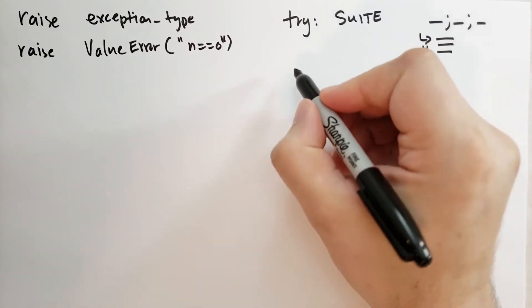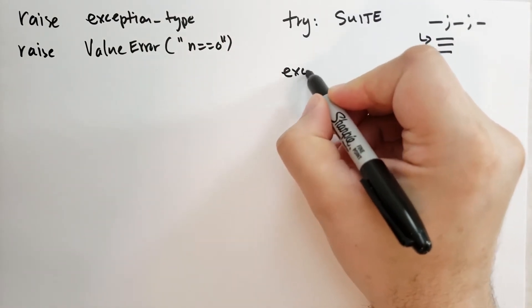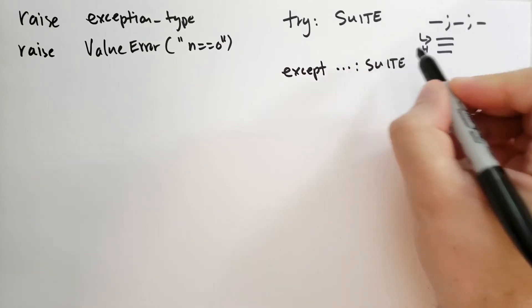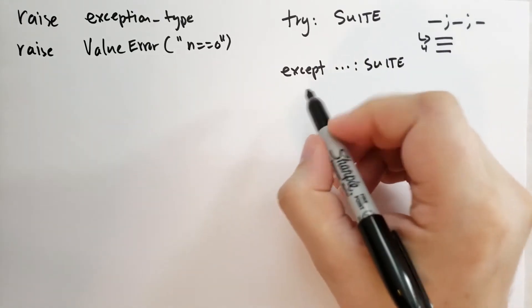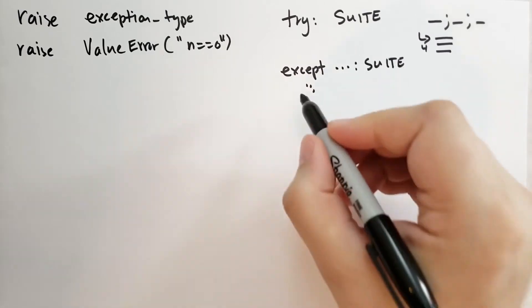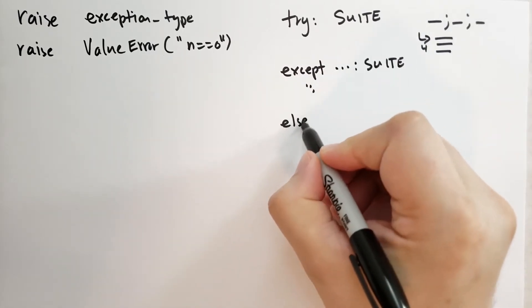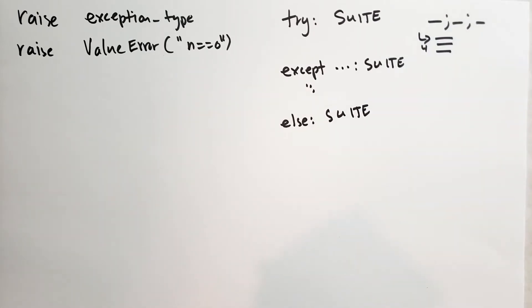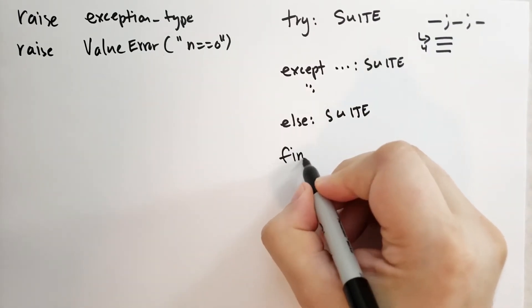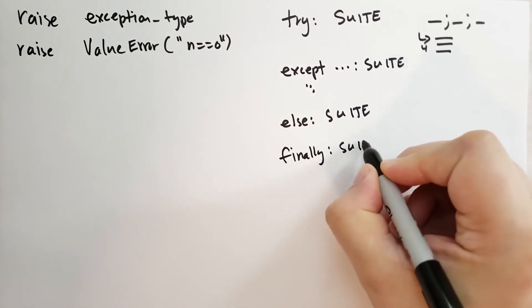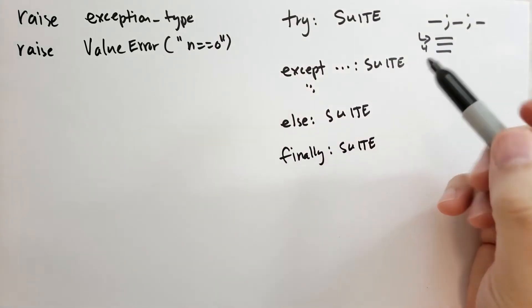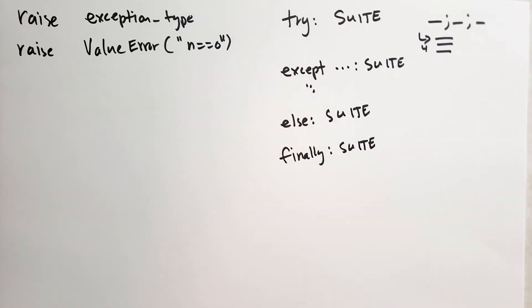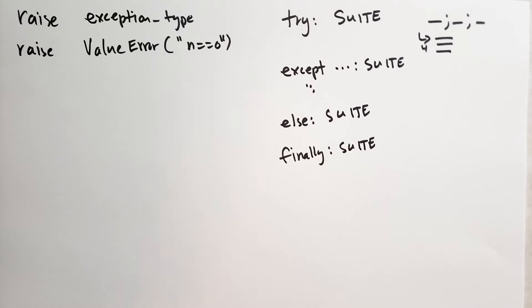In the try suite, optionally, you can have except blocks. And these have their own suite. You can have as many of these as you want. If you have an except block, then you can also have an else block that has its own suite. And you may also have a finally block. You must have at least one except block or a finally block. And you can't have an else block unless you have an except block.